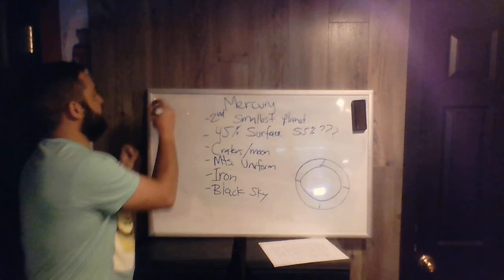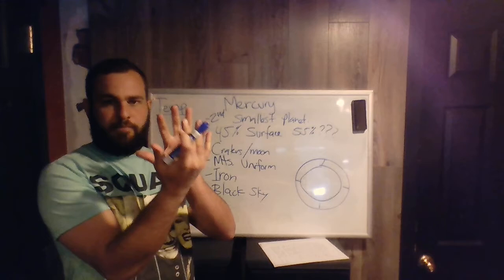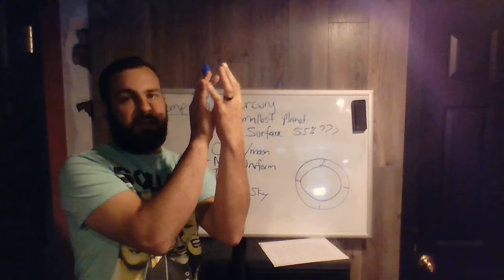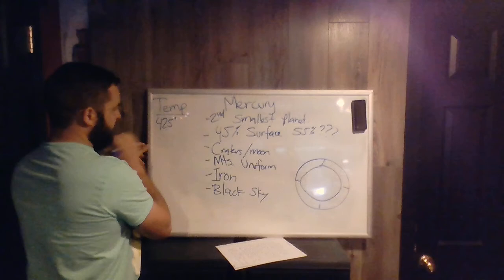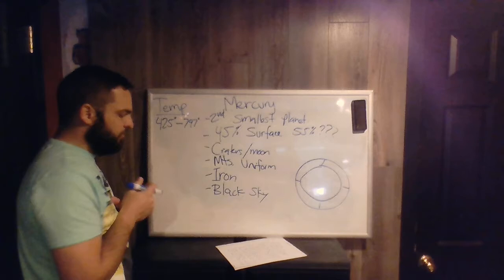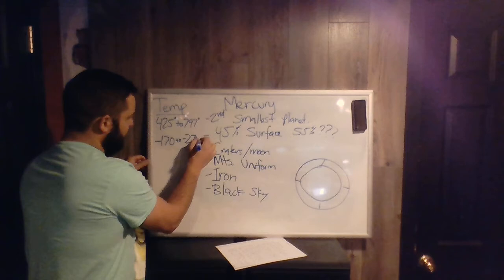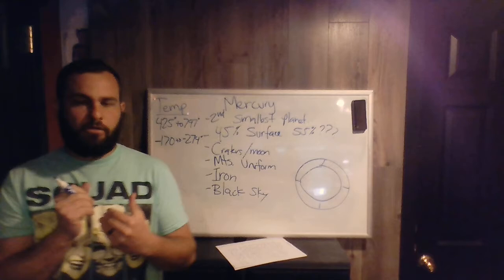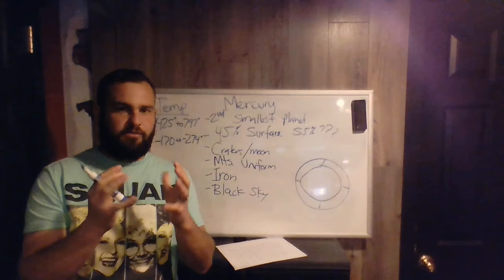I wanted to talk about the temperature. As planets rotate and move, there's always going to be a dark side and a light side of the planet, and this will affect the temperatures greatly. On Mercury, the temperatures during the daytime can be anywhere from 425 degrees Fahrenheit to 797 degrees Fahrenheit. That's pretty hot. And at night it can be anywhere from negative 170 degrees to negative 274 degrees Fahrenheit. Quite the contrast — it'd be freezing cold on the dark side and extremely hot on the other side. As it turns, those extremes just change.